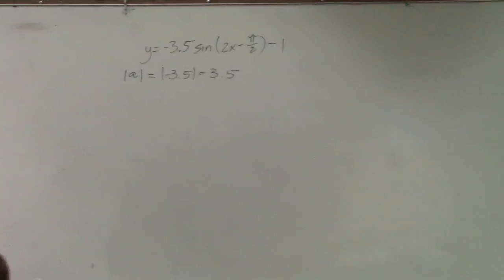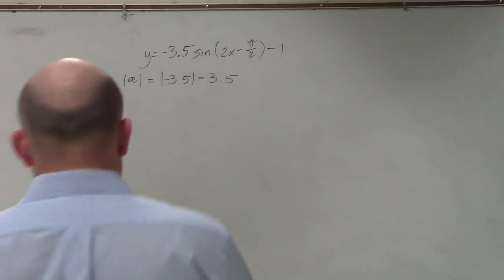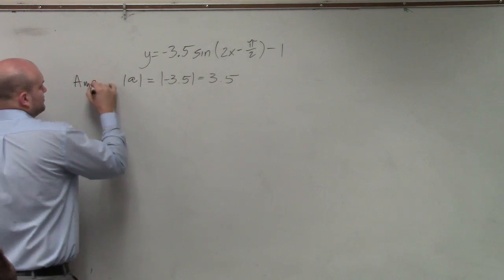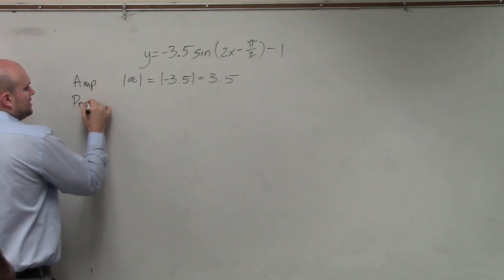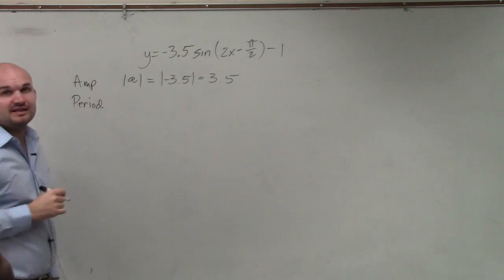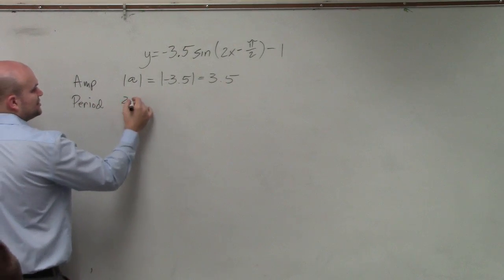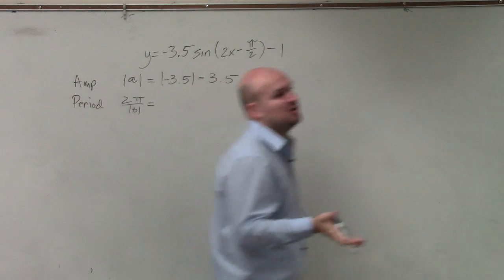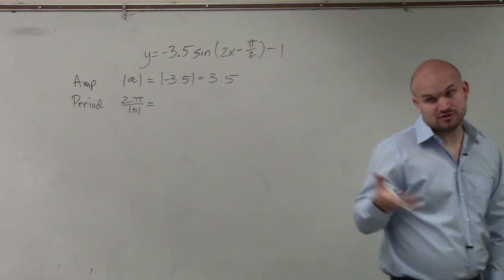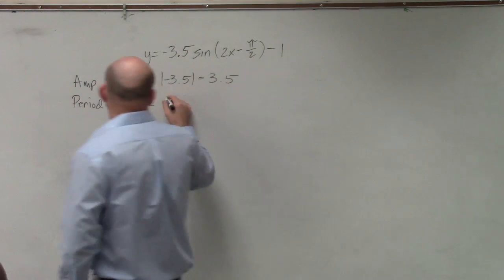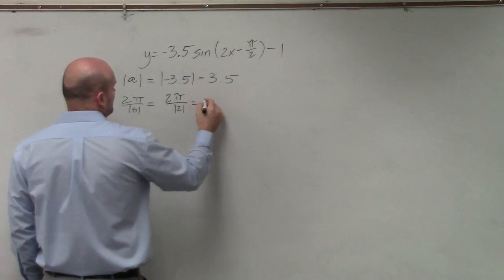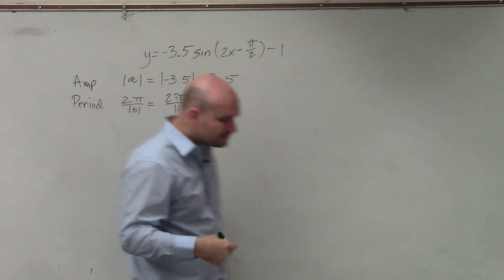To find the period, all we need to do is 2π divided by the absolute value of B. B is what's being multiplied by X inside our function, which in this case is 2. So we have 2π divided by the absolute value of 2, which is just π.